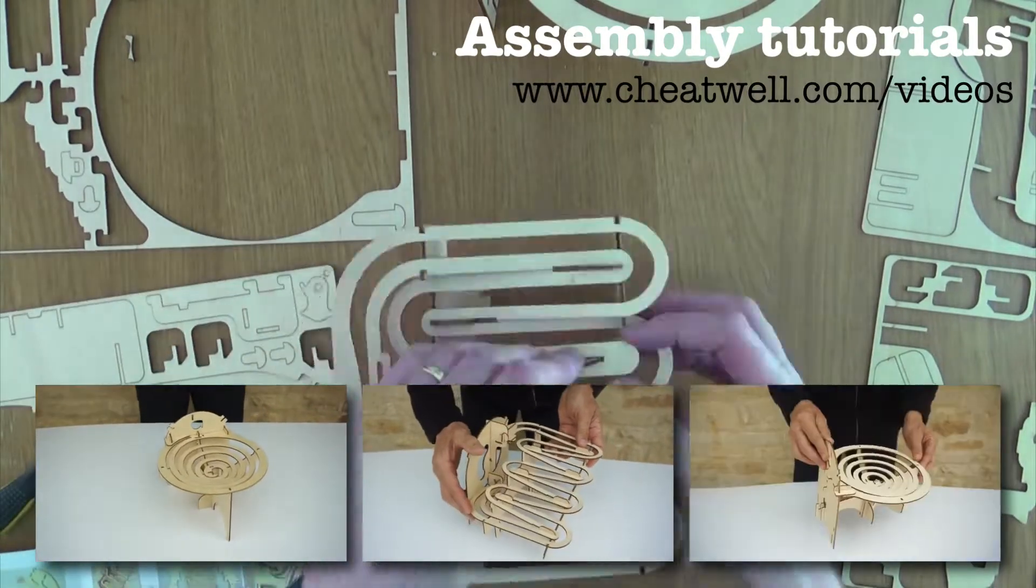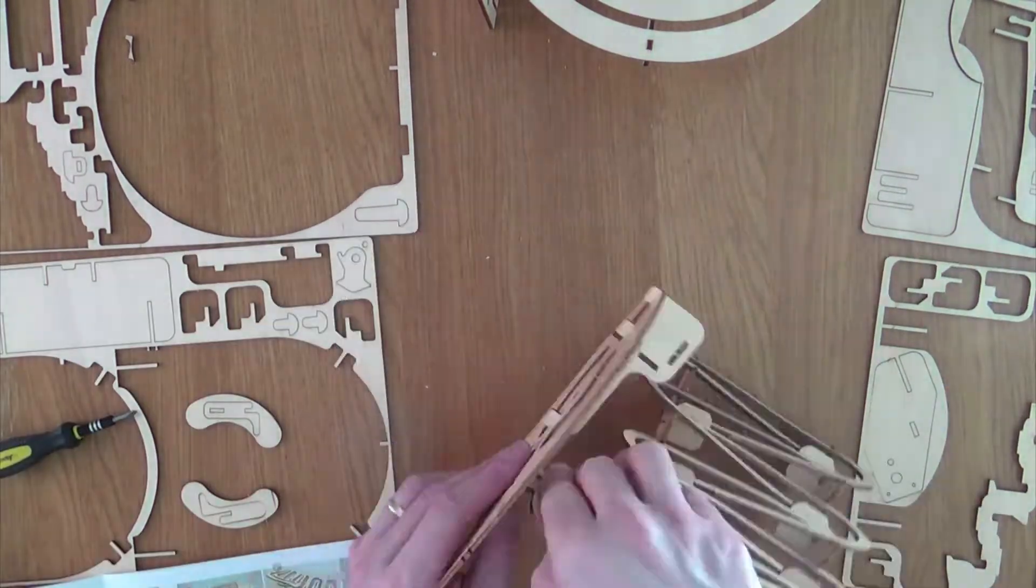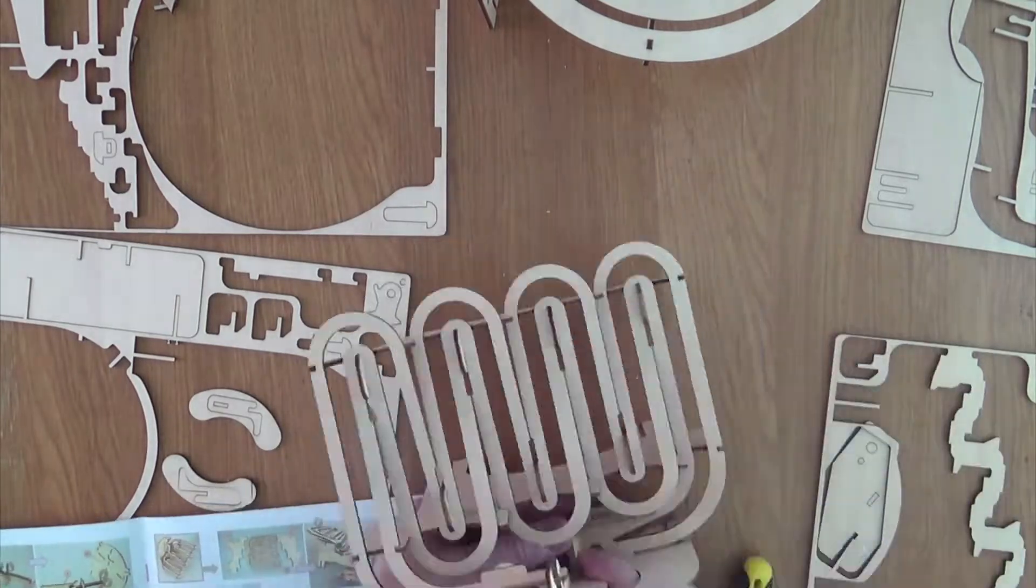Along with the manual, inside the box you'll find 4 plywood sheets containing the 54 laser cut pieces that slot together to make the marble run.